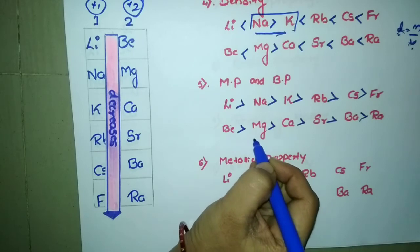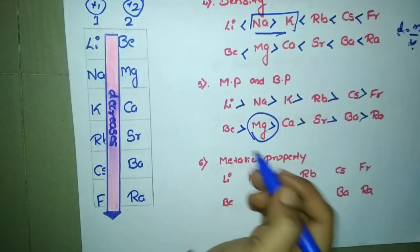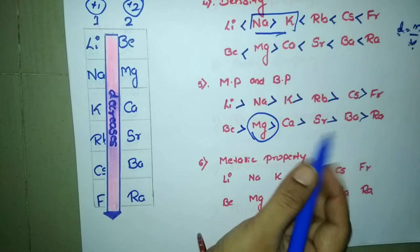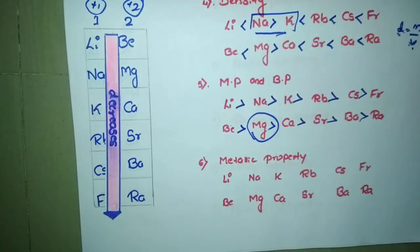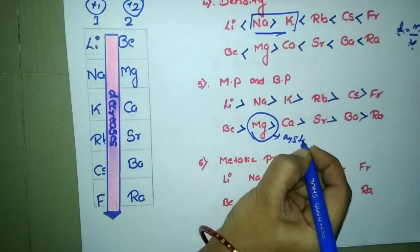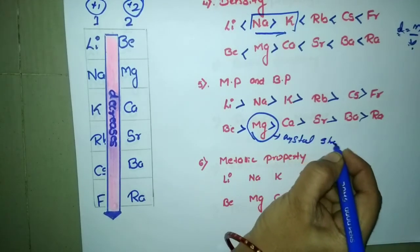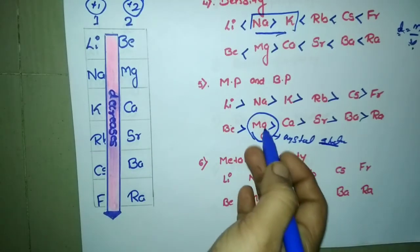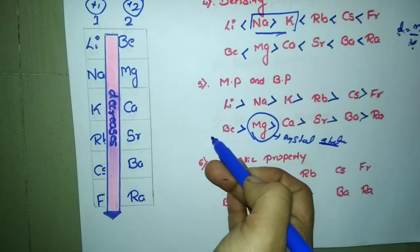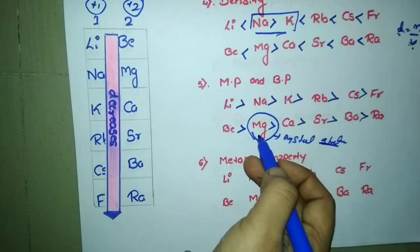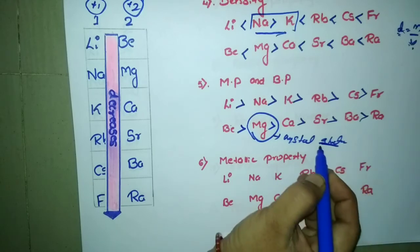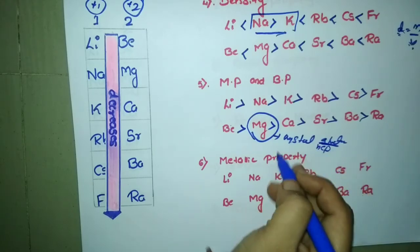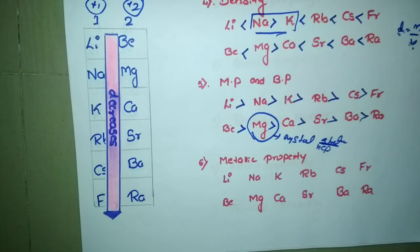There is an exceptional case for magnesium. Among all the group 2 elements, magnesium has the lowest melting and boiling point. This is because of its crystal structure — magnesium exhibits an HCP (hexagonal close-packed) crystal structure, which is responsible for its unusually low melting and boiling point.